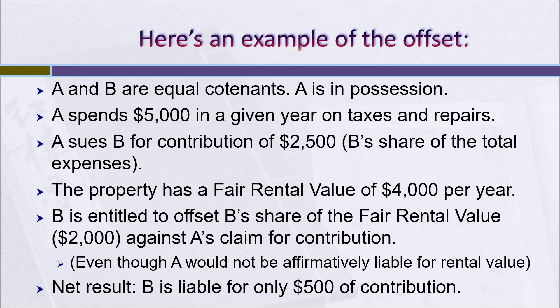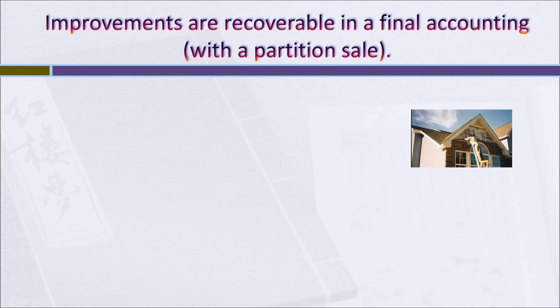The net result is that B is liable for only $500 of contribution. You can see that in many cases the fair rental value of the property would exceed the amount that the in-possession co-tenant is expending for taxes, repairs, and other expenses, and the result is that the possessing co-tenant won't be able to collect any money at all by way of contribution. We've already seen that a co-tenant who's in possession and makes improvements to the property, as distinguished from repairs, can't recover any contribution from the other co-tenants at the time the improvements are made.